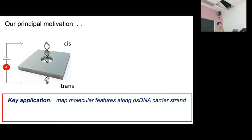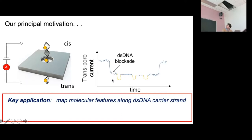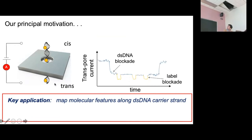The key application for this talk is not sequencing — it's a mapping application. We're focusing on mapping probes bound to DNA translocating through a pore. We think of these as little physical bumps along the molecule. When the labeled DNA goes through the pore, you get the DNA blockade, but you also see the physical bumps on top of that blockade, and you can use these bumps to pinpoint the location of the probes as the molecule goes through.